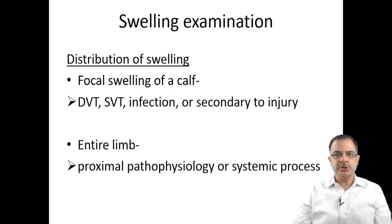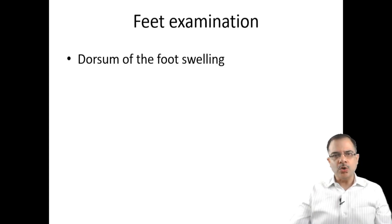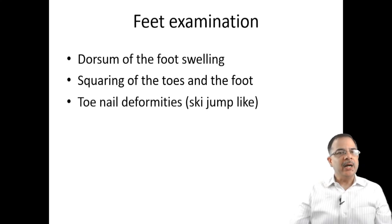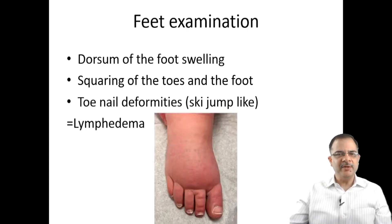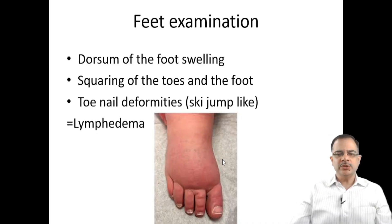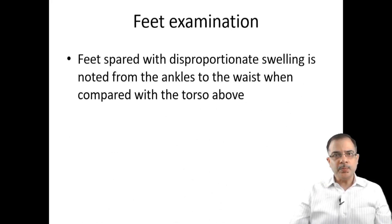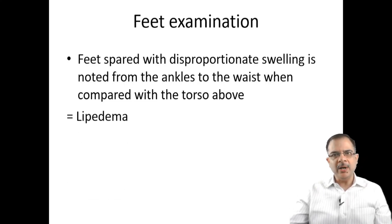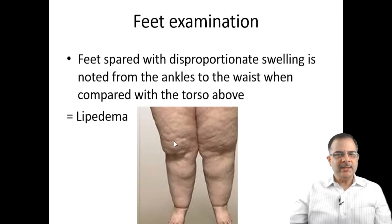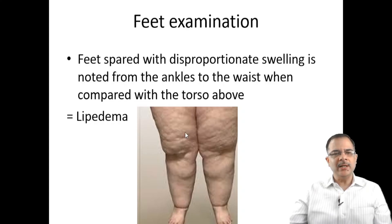If the entire limb is affected, there are likely proximal pathologies like IVC obstruction or systemic processes like heart failure, renal failure, or liver failure. Examine the feet: swelling of the dorsum of the foot with squaring of the toes and toenail deformity — concave and hypoplastic — is more suggestive of lymphedema. If the feet are spared but there is disproportionate swelling from the ankle to the waist compared to the trunk, this is most likely lipedema — excess subcutaneous fat deposition in the legs.